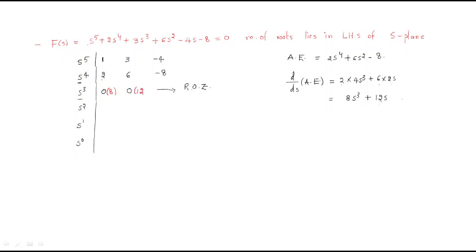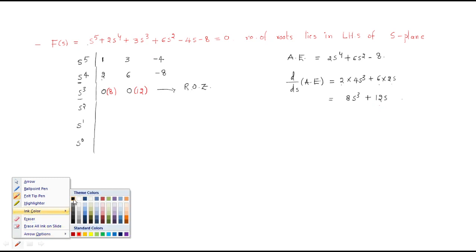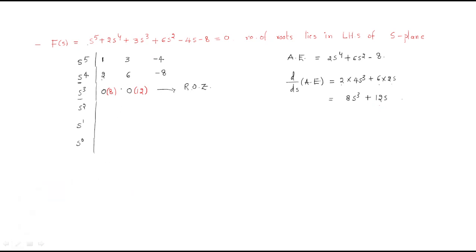Moving to the next row: (8×6 - 2×12) / 8 = (48 - 24) / 8 = 24/8 = 3. So the coefficient is 3. The next coefficient can be taken directly as -8.